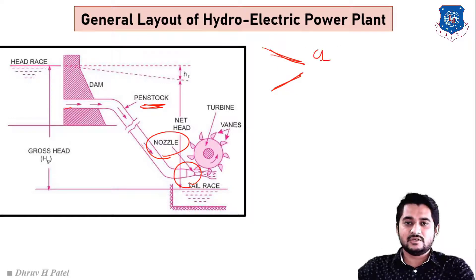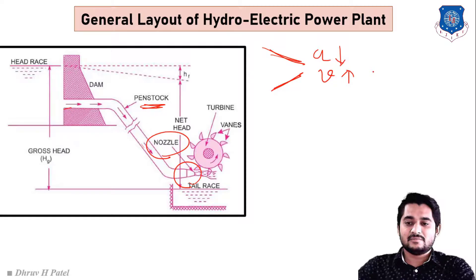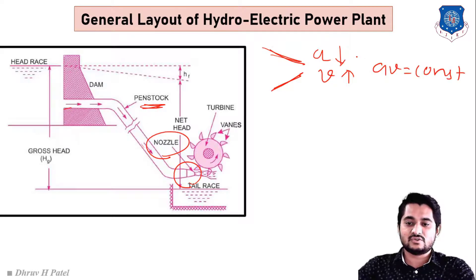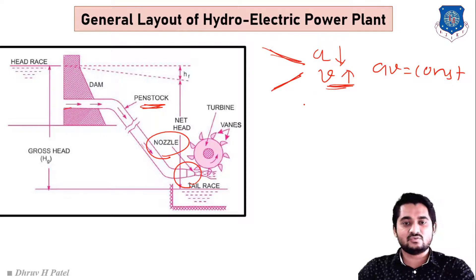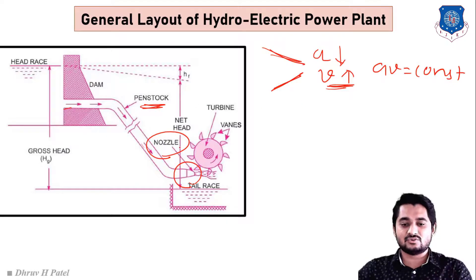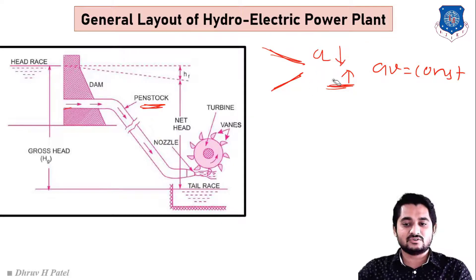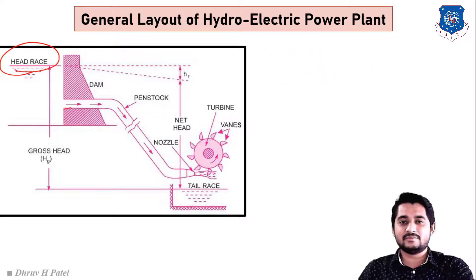The purpose of the nozzle: its shape reduces the cross-sectional area, so by the continuity equation AV = constant, as area decreases velocity increases. This allows water to be applied to the turbine blades with higher velocity.